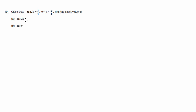We have to find exact values of first of all cos 2x and then cos x. For an exact value, tan of an angle is 3 quarters. Let's get a diagram drawn. Remember tan is opposite over adjacent — 3 over 4. So we should have a right triangle where 3 is the opposite and 4 is the adjacent, giving us the angle 2x. The tan of 2x is certainly 3 quarters.